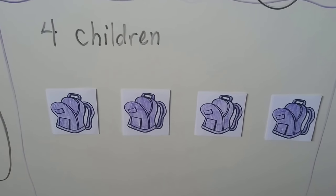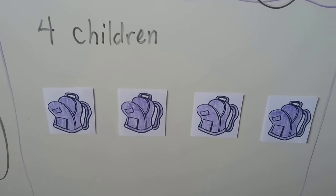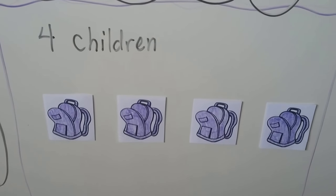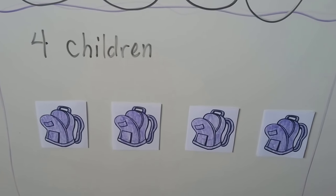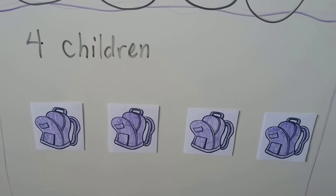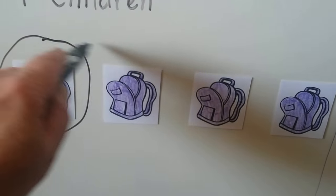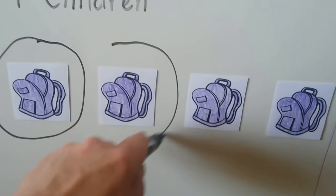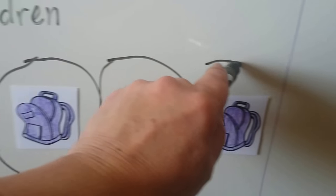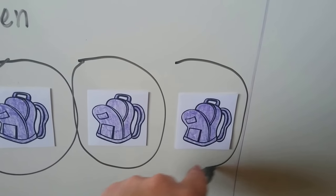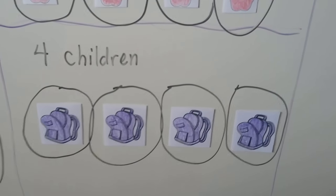Now we have four children and we have four backpacks. Can you see how each child will get a fair share? They'll each get one, won't they? There are four children and four backpacks — they'll each get one, and that will be fair shares.